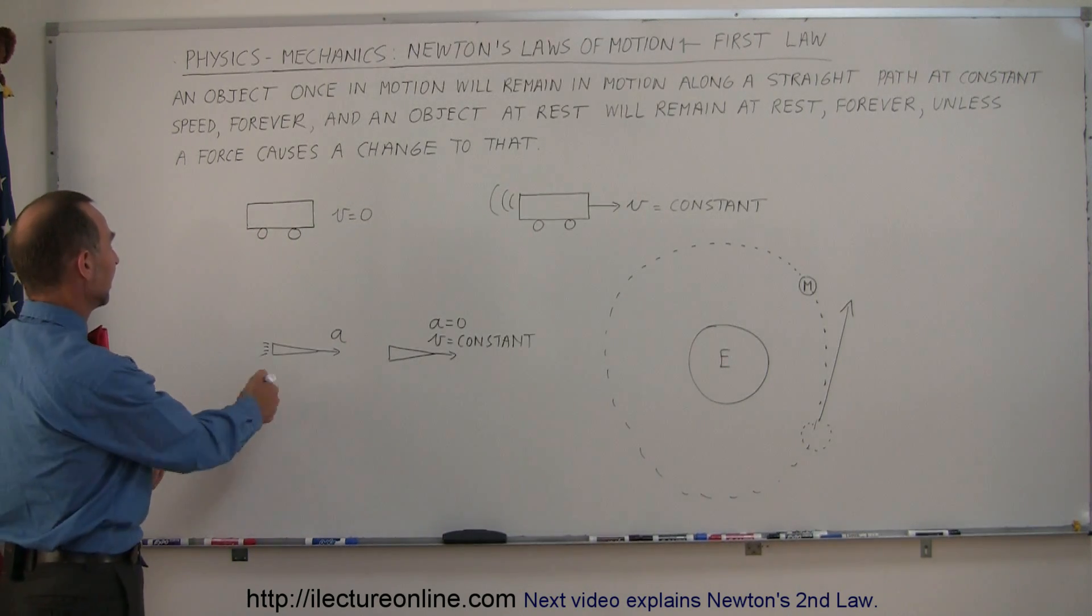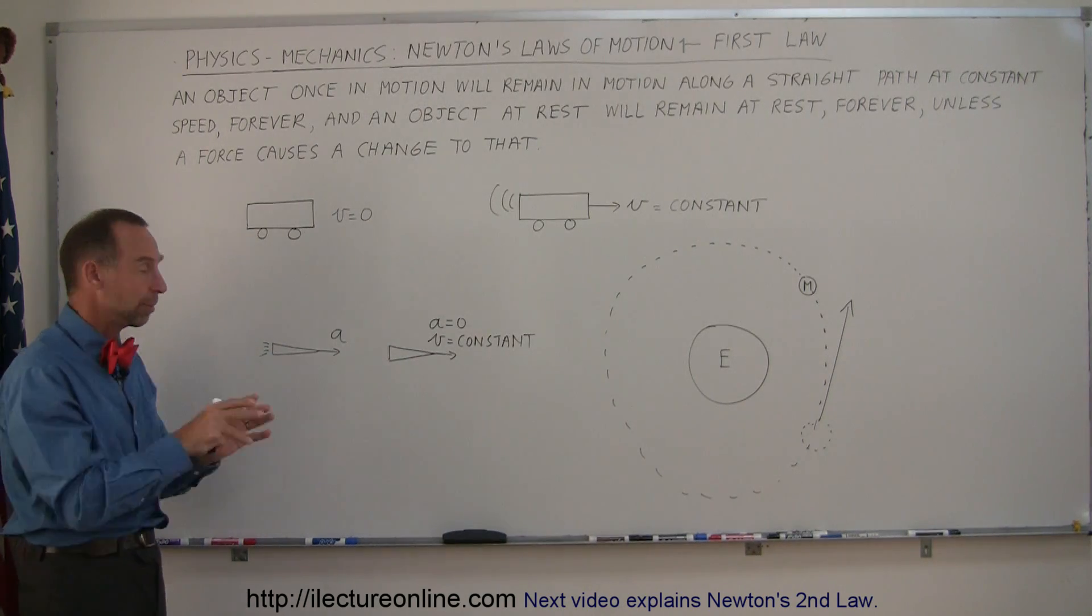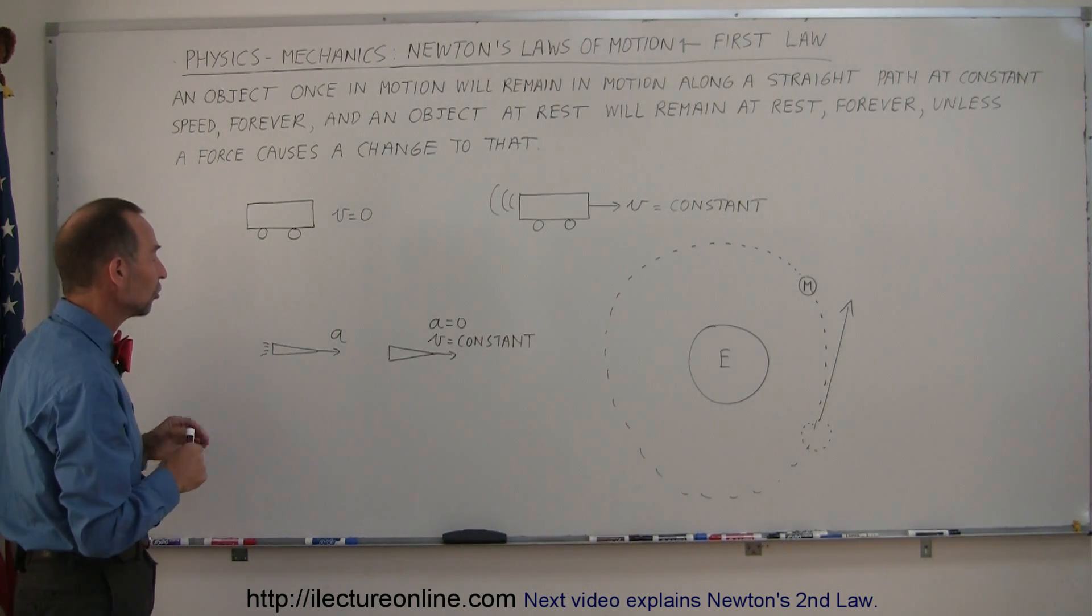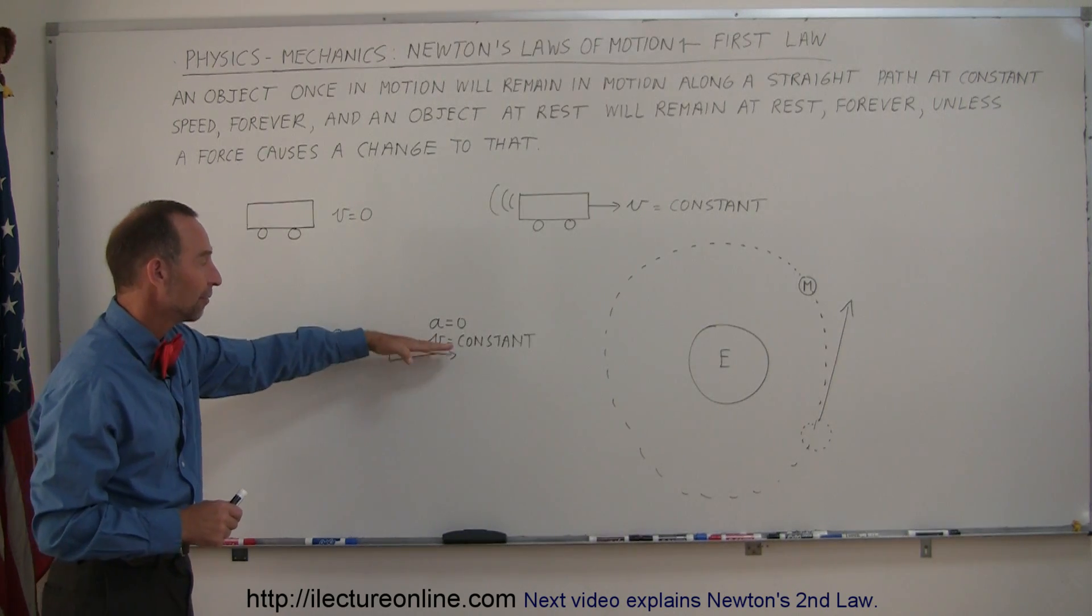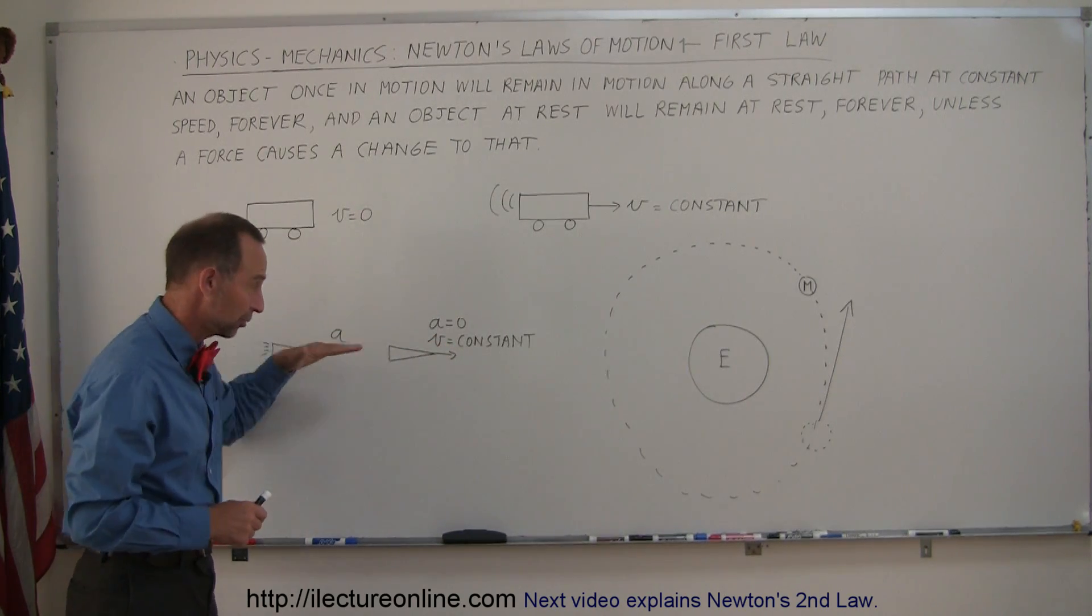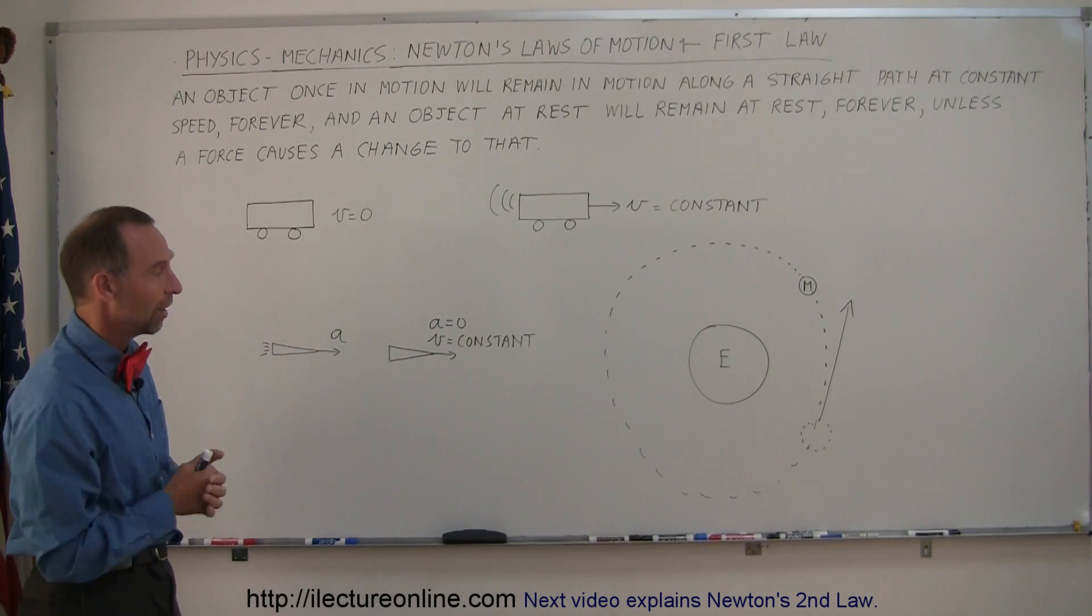Let's say we have a rocket with engines going—the rocket is accelerating because of the force applied by the engines. As soon as we shut the engines off, acceleration stops and velocity remains constant. The rocket continues in a straight line unless a planet pulls it gravitationally.